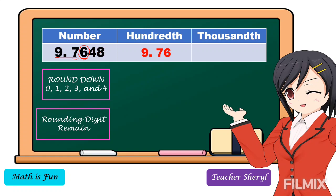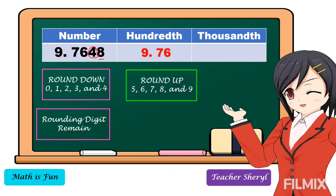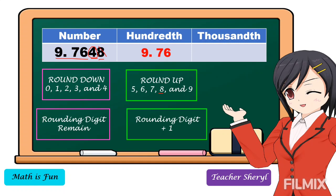Now, if we're going to round it off to the nearest thousandths, what is our thousandths digit? It is 4. What is the digit to the right of 4? It is 8. What is 8 — round up or round down? 8 is a round-up digit. So what shall we do with 4? We're going to add 1 — 4 becomes 5. Then the left-side digits we copy, and we drop 8. So our final answer is 9 and 765 thousandths.